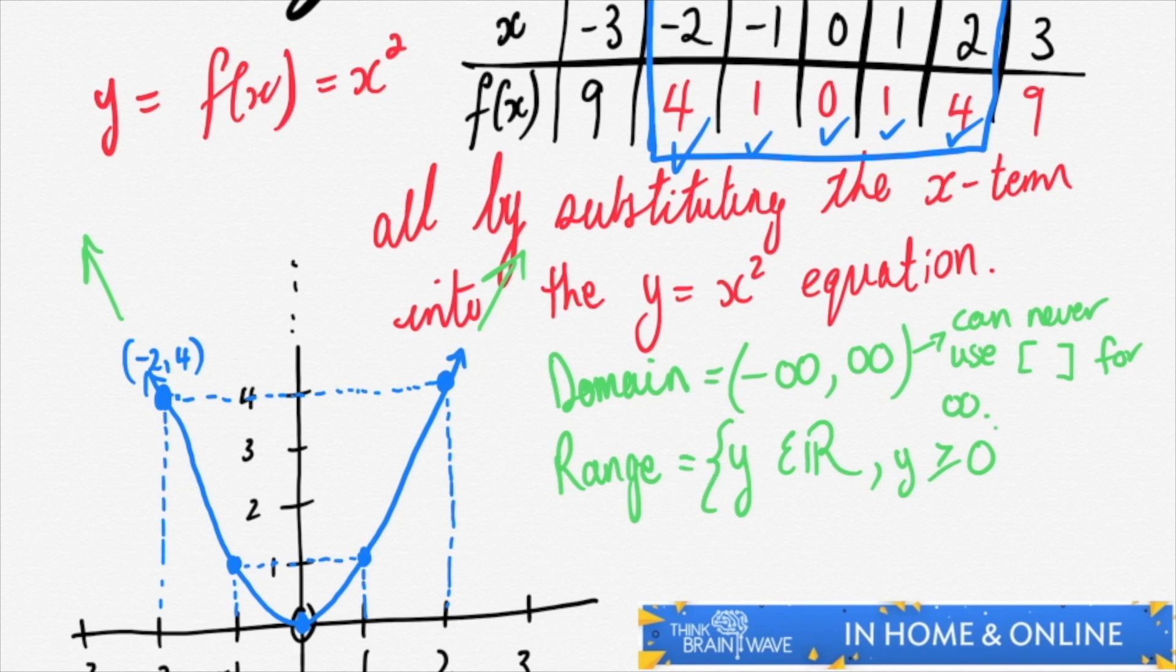You can also write it as zero tends to positive infinity. You can put a square bracket around zero and a round bracket around positive infinity.